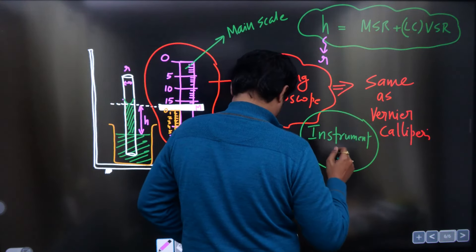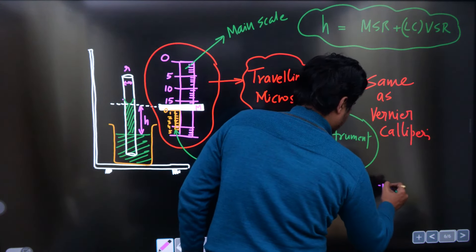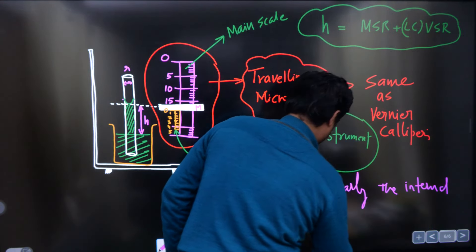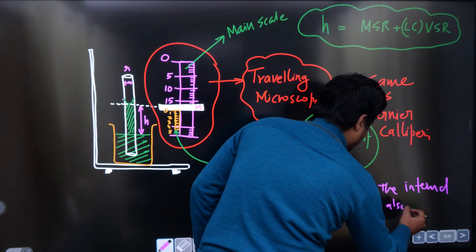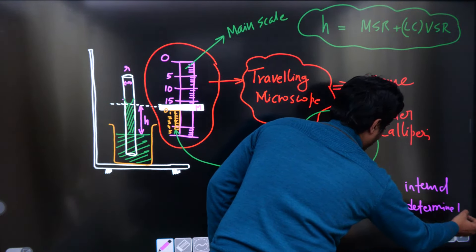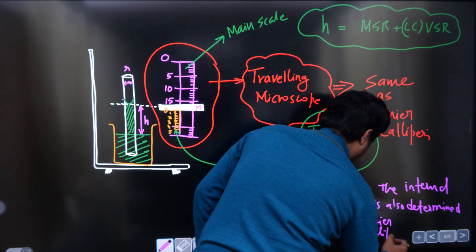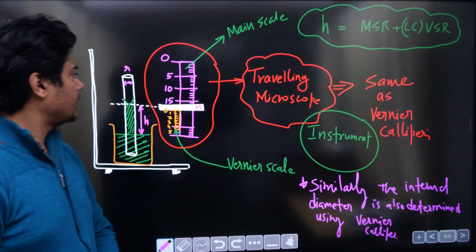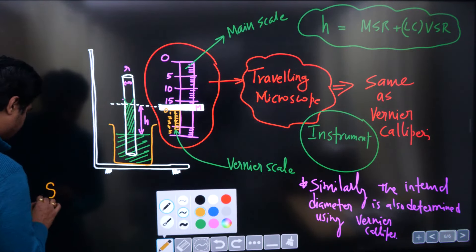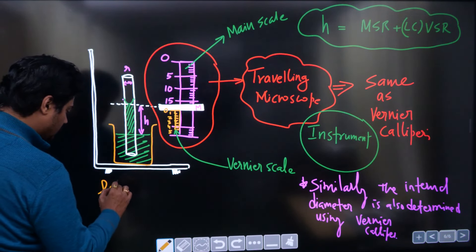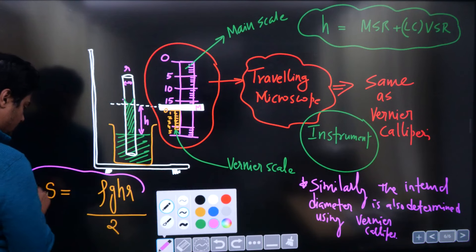Similarly, the internal diameter r is also determined using the vernier caliper. Once you have r and h, the surface tension formula is: S = ρghR / 2. Just substitute all the values and you can determine the surface tension.